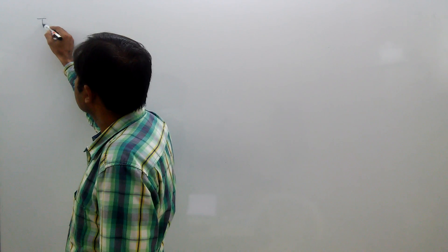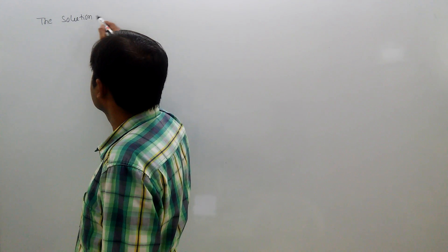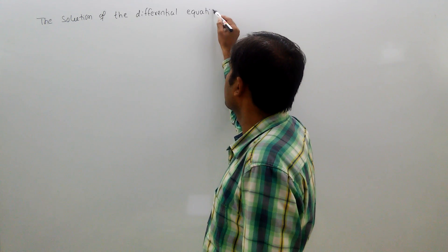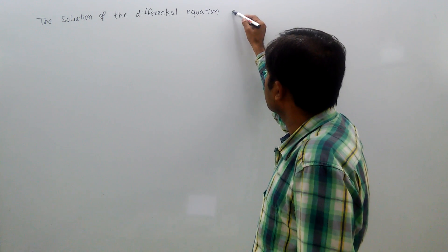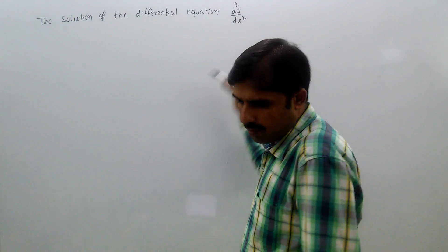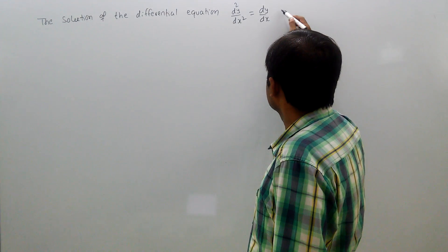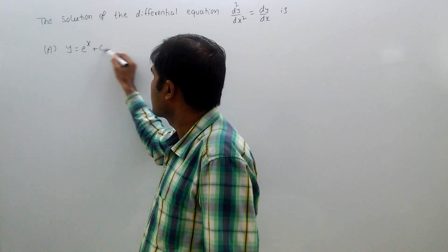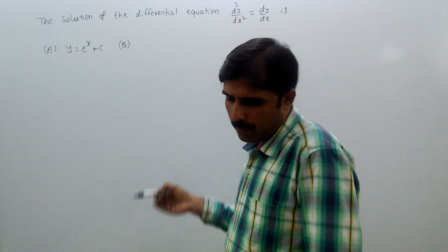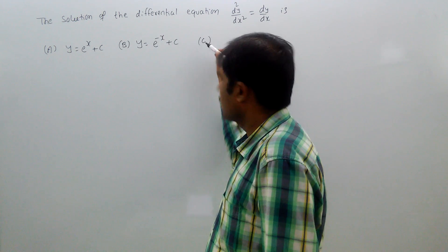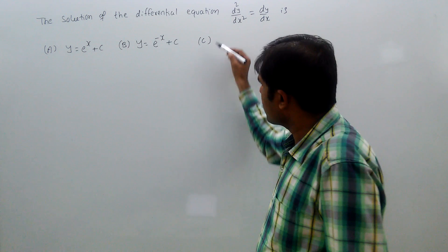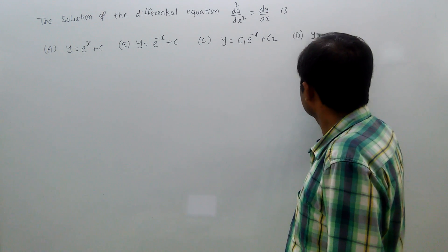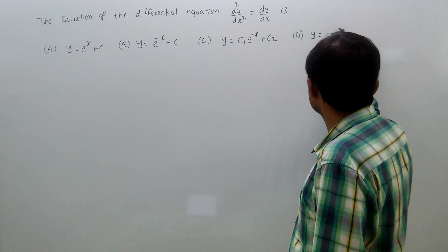The solution of the differential equation d squared y by dx squared equal to dy by dx. Option a: y equal to e power x plus c. Option b: y equal to e power minus x plus c. Option c: y equal to c1 e power minus x plus c2. Option d: y equal to c1 e power x plus c2.